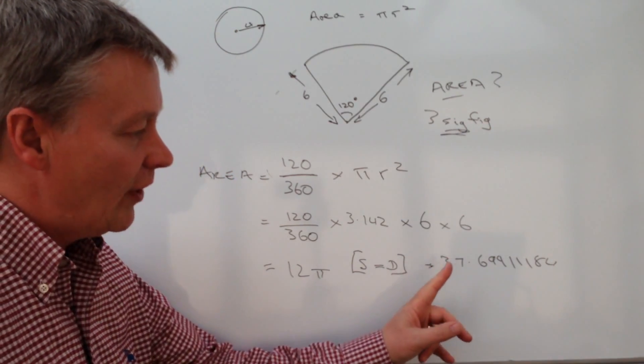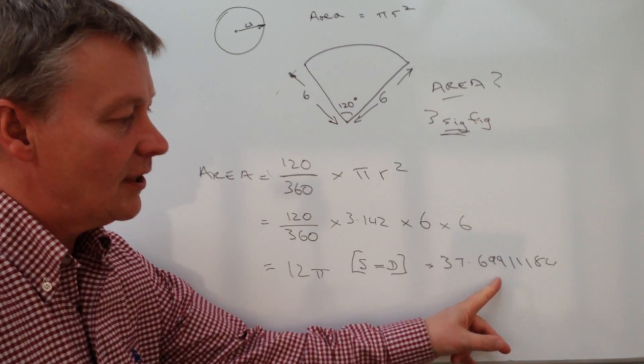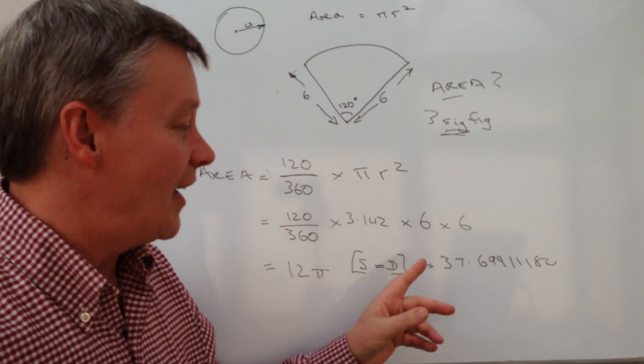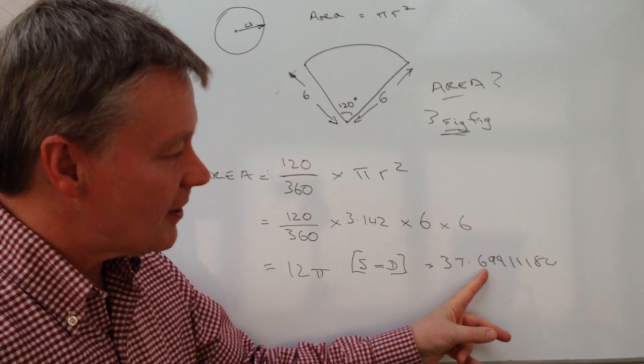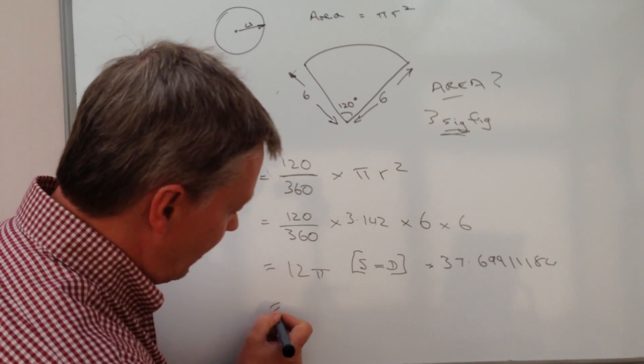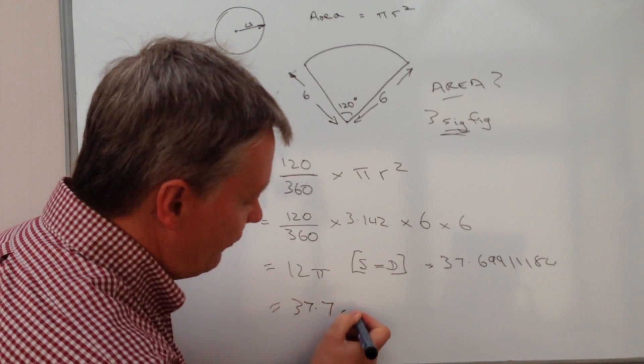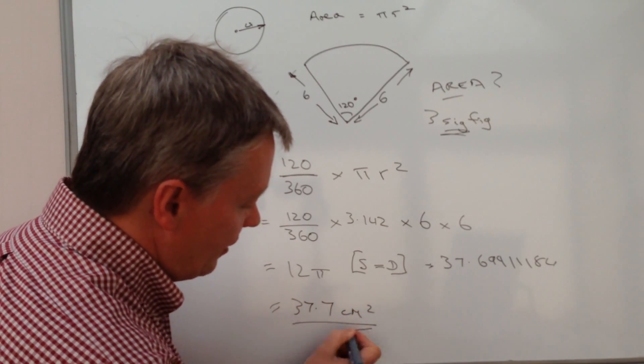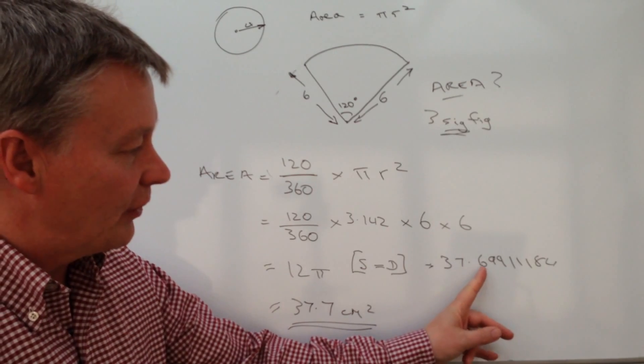So three significant figures of 37.69911 is the third number is 6. It needs to change.